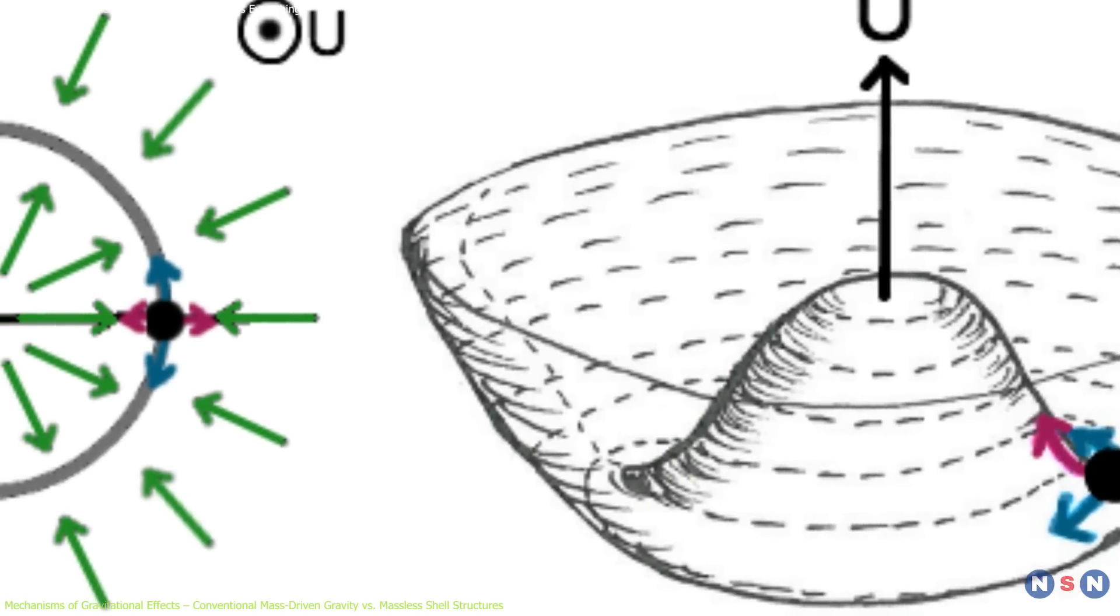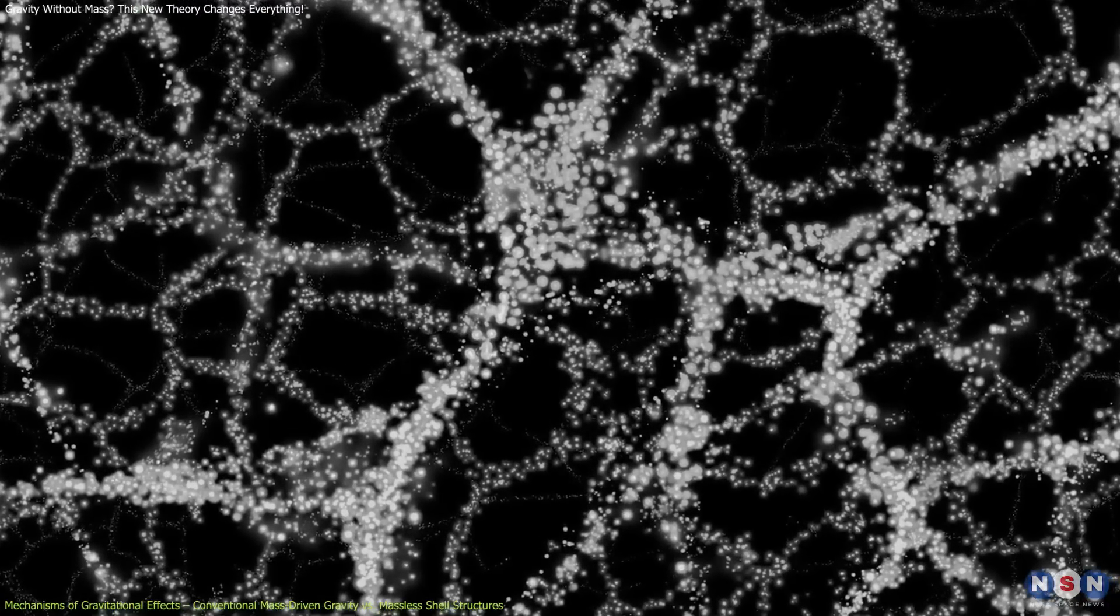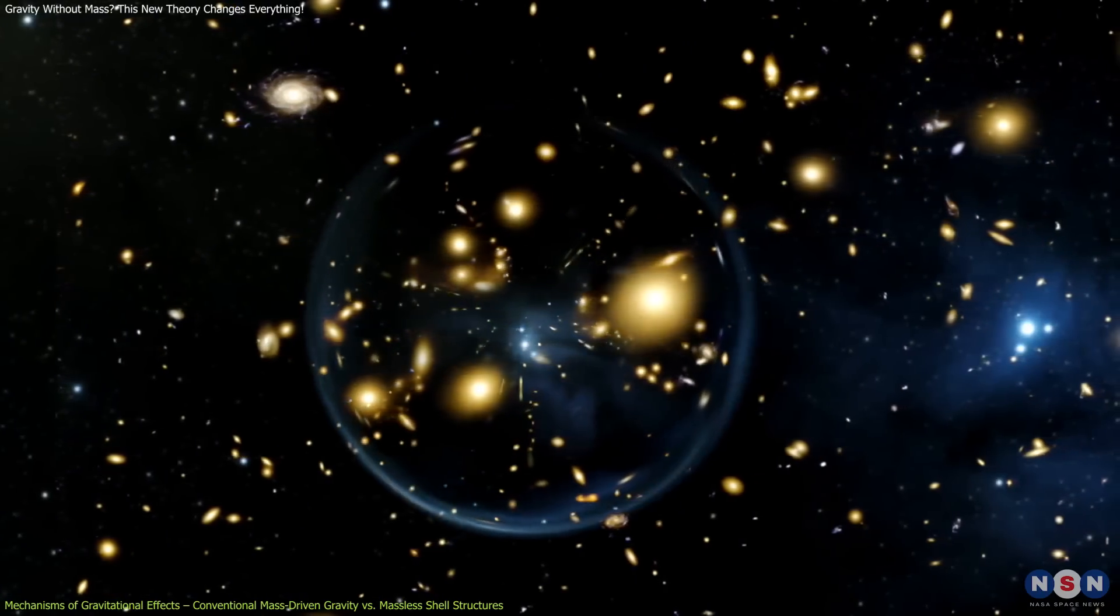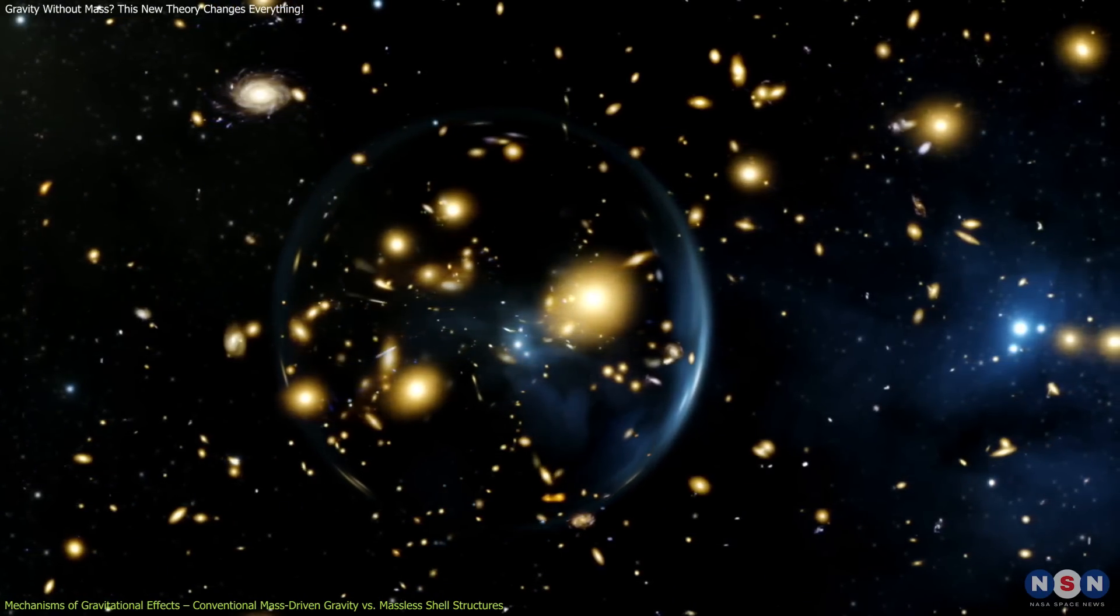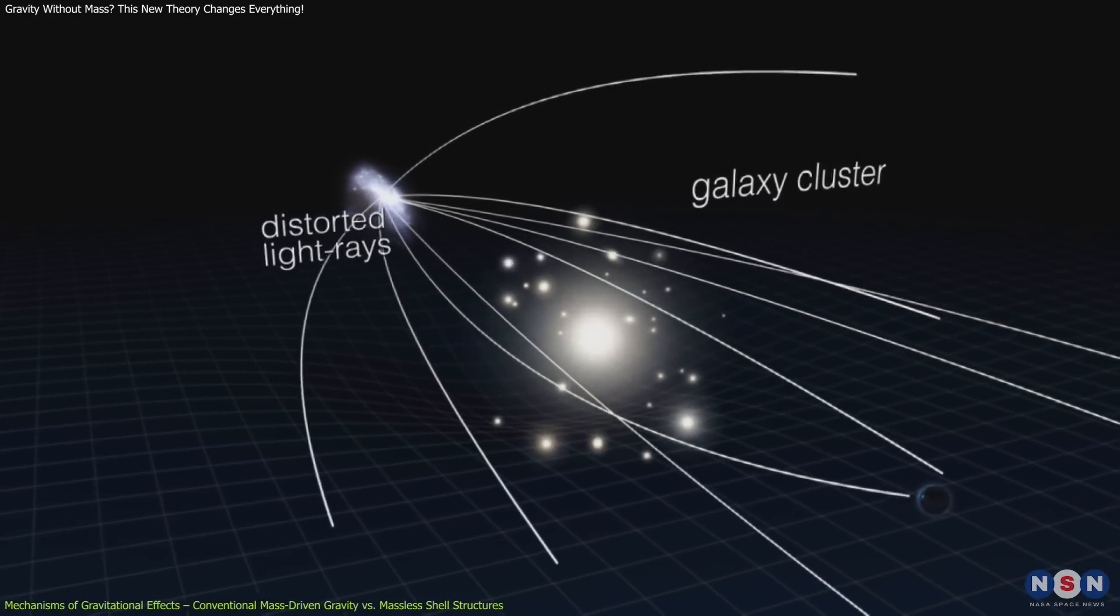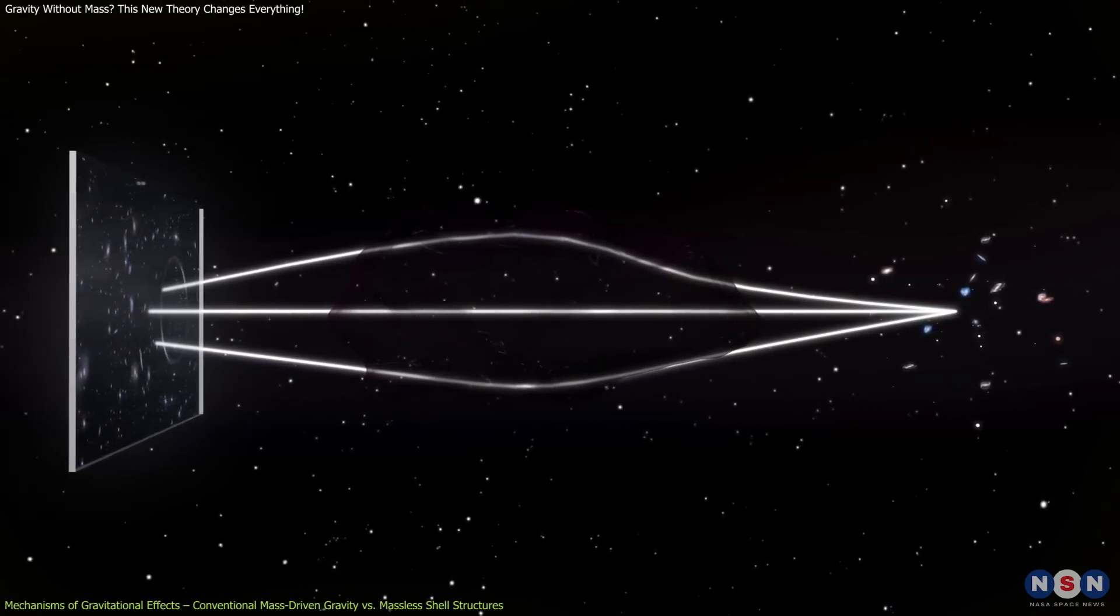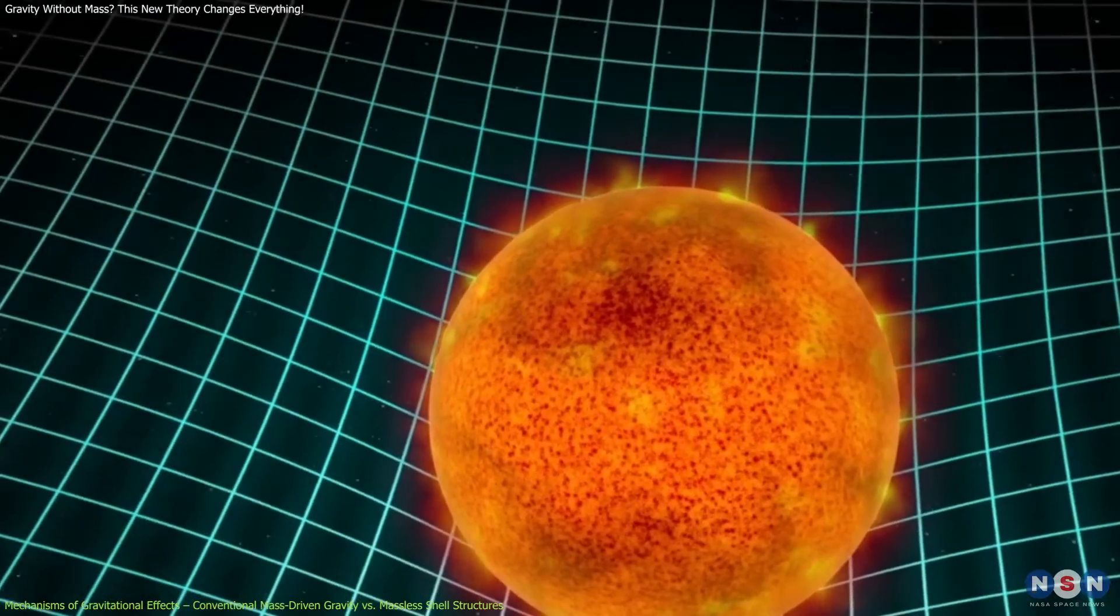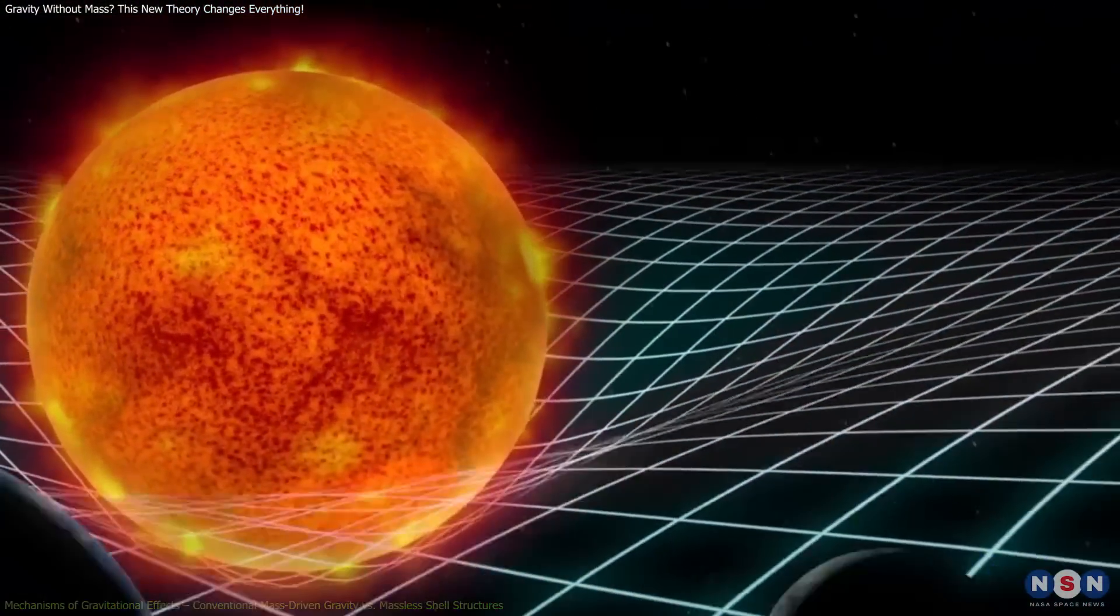Liu's massless shells could provide the necessary gravitational pull without invoking dark matter. Furthermore, these shell structures could account for gravitational lensing effects observed in galaxy clusters. As light passes through these shells, it would be deflected inward, mimicking the lensing effects typically attributed to dark matter. This offers a novel explanation for gravitational phenomena without relying on unseen mass.